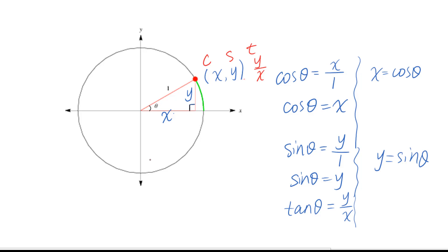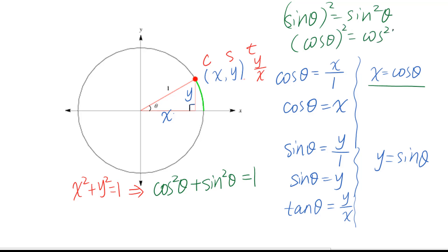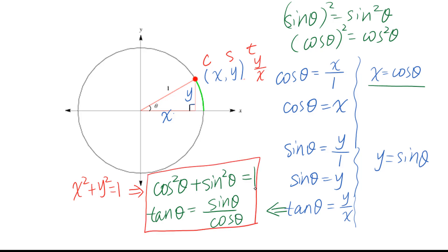For the unit circle, we know this is always true: x squared plus y squared equals 1. We plug in cosine theta for x and sine theta for y, giving us cosine squared theta plus sine squared theta equals 1. And from tangent theta equals y over x, we get tangent theta equals sine theta over cosine theta. Try to remember these two very basic but important trig identities.